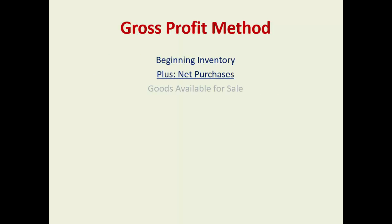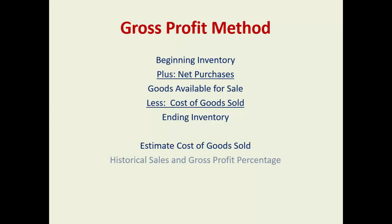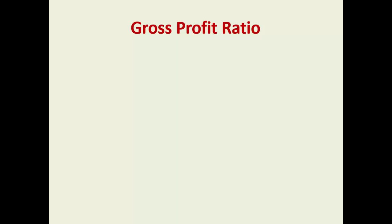You have beginning inventory plus your net purchases — this gives you goods available for sale. Subtract your cost of goods sold to give you ending inventory, because that's what you want to estimate: what is my inventory? The cost of goods sold is an estimate, and historic sales and gross profit percentage are used.